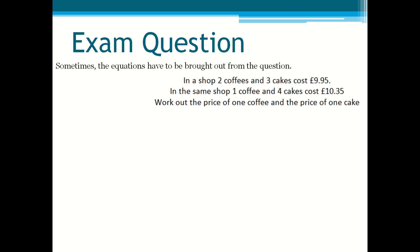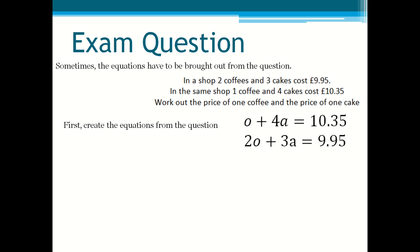In a shop, two coffees and three cakes cost £9.95. In the same shop, one coffee and four cakes cost £10.35. Work out the price of one coffee and the price of one cake. First you create the equations from the question. Usually you would use the first letter of the variables, but since the first letter is the same for both, we use the second letters. So O stands for coffee and A stands for cake. We have O + 4A = 10.35 and 2O + 3A = 9.95.